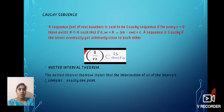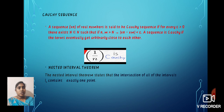Next, we define Cauchy sequence. A sequence {Xn} of real numbers is said to be a Cauchy sequence if for every epsilon greater than 0, there exists N belongs to N such that if n, m greater than N, then |Xn - Xm| is less than epsilon. A sequence is Cauchy if the terms eventually get arbitrarily close to each other. For example, 1/n is a Cauchy sequence.